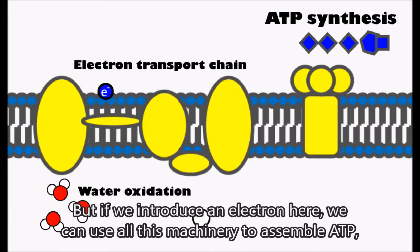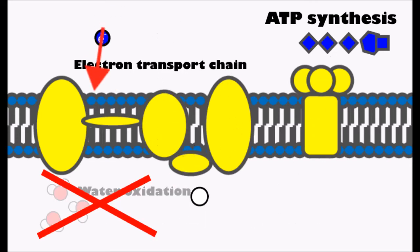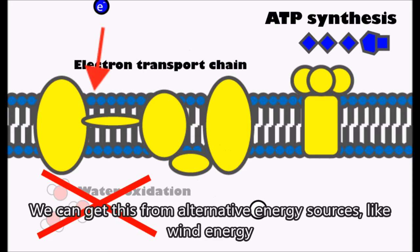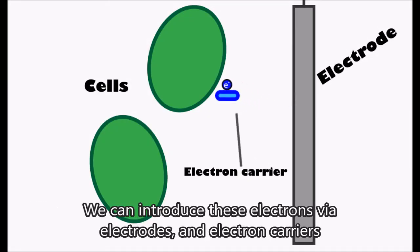But if we introduce an electron here, we can use all this machinery to assemble ATP, but we do not rely on light to get this electron. We can get this from alternative energy sources like wind energy. We can introduce these electrons via electrodes and electron carriers.